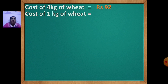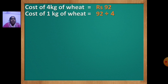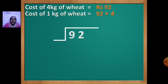The first statement: cost of 4 kg of wheat is rupees 92. The second statement: we have to find the cost of 1 kg of wheat. So we are going to do 92 divided by 4. That is the sign of divide. Now, the bigger number, 92, will come inside, and 4 will come out. Here, dividend is 92 and divisor is 4.